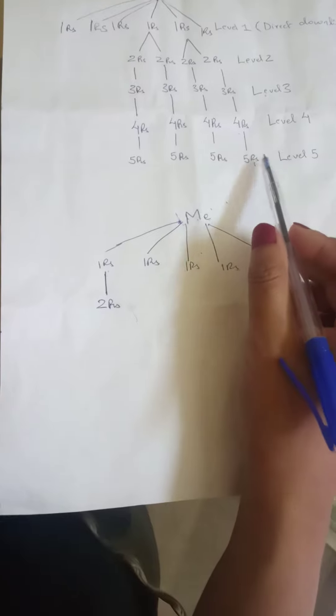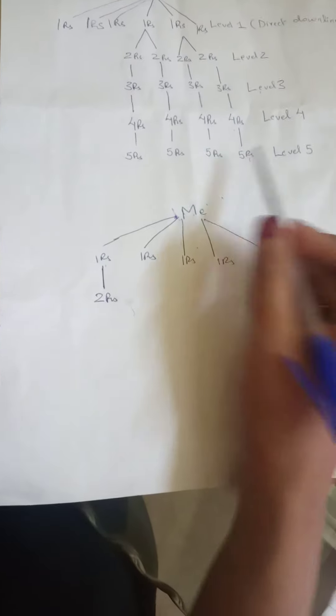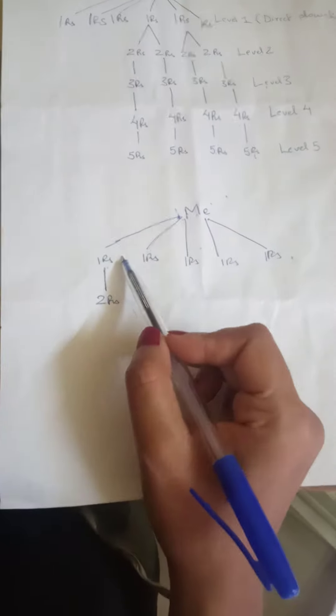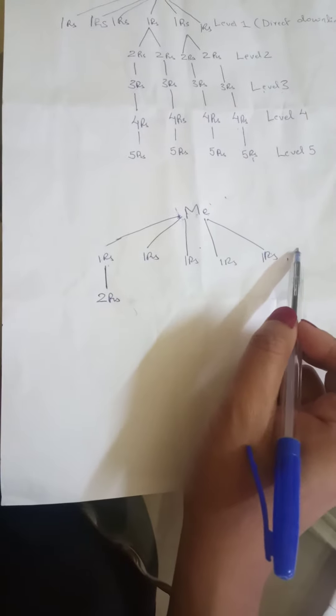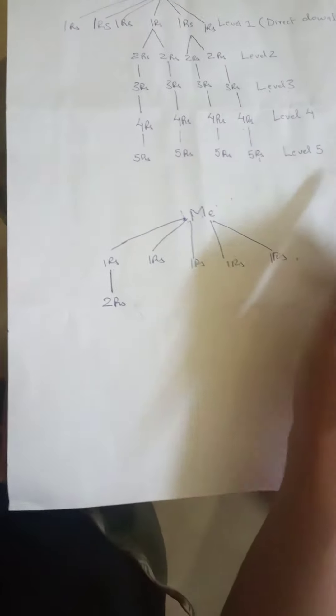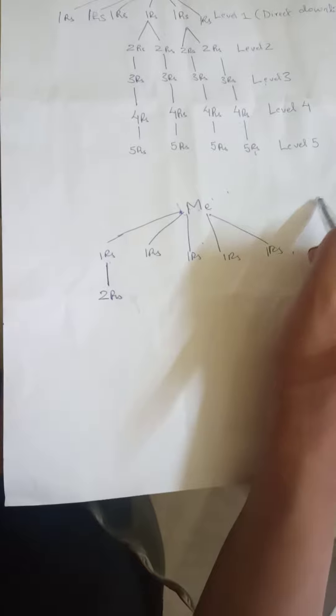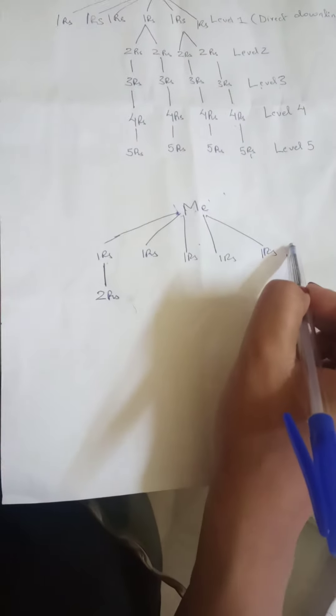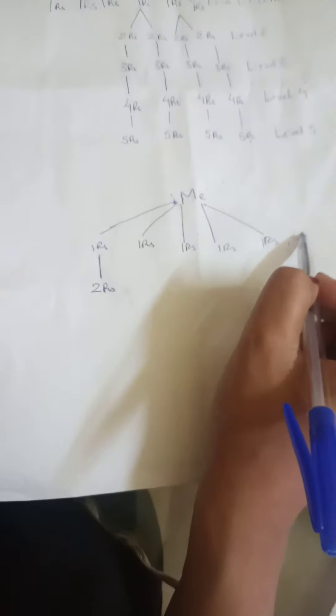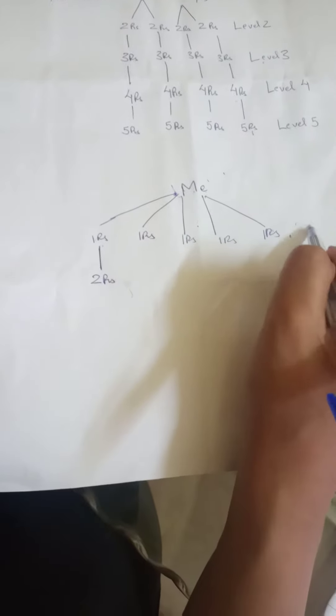Because to qualify for level five, I need six direct downlines. But here I have one, two, three, four, five direct downlines. So now I have another person who wants to join. I will not register him under me. I can do that, but I will be getting only one rupee from him.